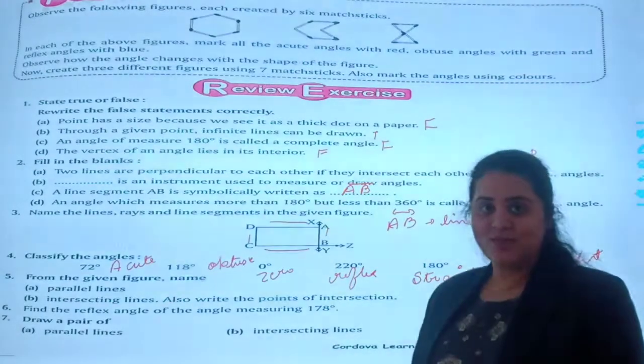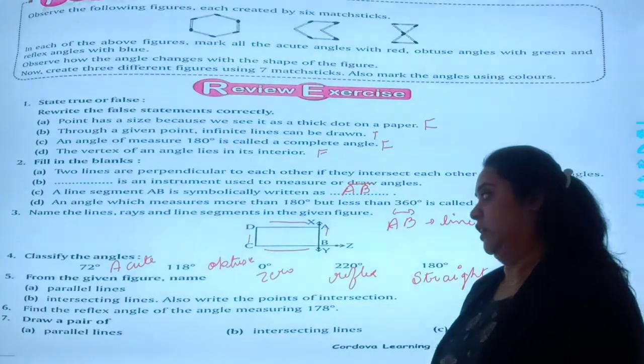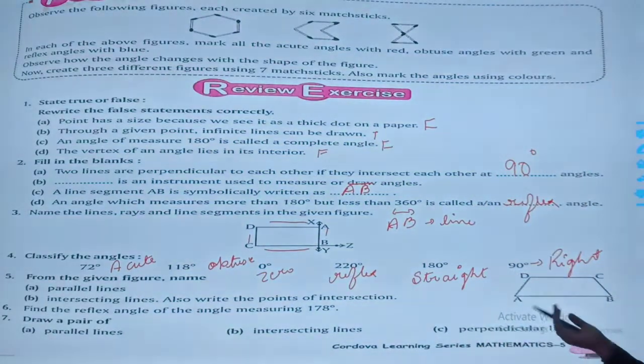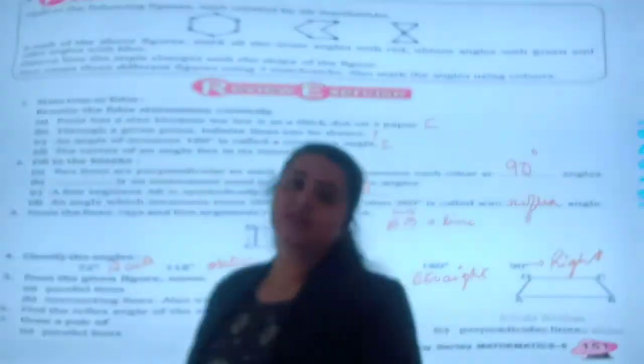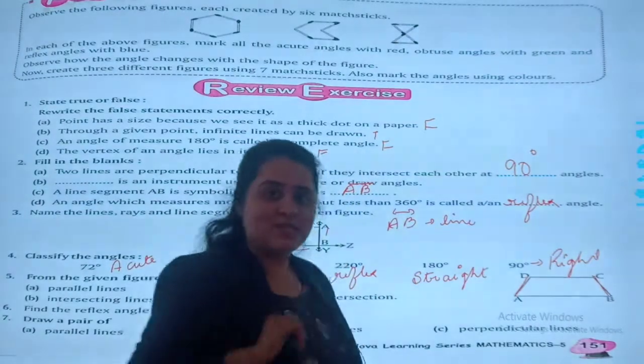Okay students, your question number 5 is, from the given figure, this is the figure, you are supposed to find the parallel lines. In this, the parallel lines will be AD and CP, this line. Understood students?